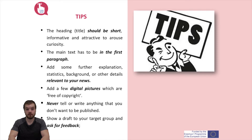It should tell journalists what they want to know in the first few lines — what is in it for them, why should they write about it. Put the main news in the first paragraph. Emphasize the news value for the journalist and the target audience. Use short, concrete and descriptive sentences in a rather formal style. A press brief is an information text and not an advertisement. Use quotes by or anecdotes of participants and youth workers. Avoid jargon and abbreviations. Add some further explanation, statistics, background or other details relevant to your news.